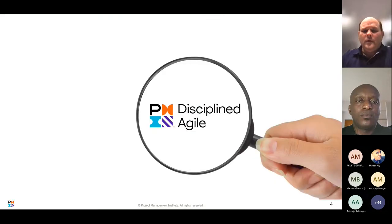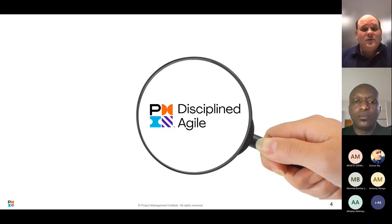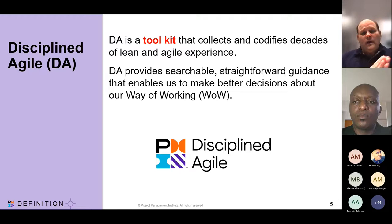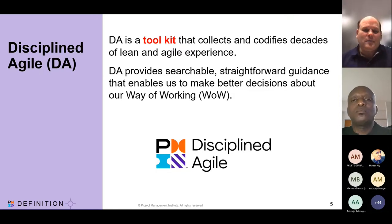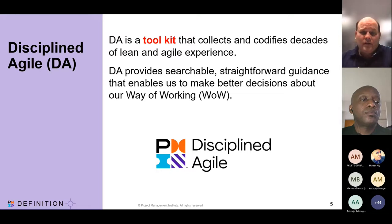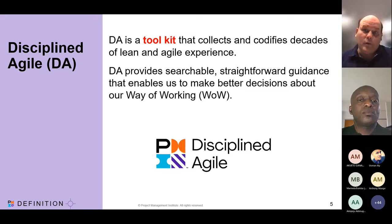So what is DA? Disciplined Agile is a toolkit, not a framework. Where frameworks and methods such as Scrum, SAFe, and LeSS prescribe or tell you what to do, in DA we tell you what to think about. We put hundreds of practices and strategies into context, because you are unique, your teams are unique, and your organizations are unique. You need a fit-for-purpose way of working.